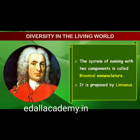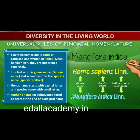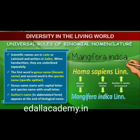Each name has two components - the generic name and the specific epithet. This system of providing a name with two components is called binomial nomenclature, given by Carolus Linnaeus and practiced by biologists all over the world. Let us take the example of mango. The scientific name of mango is written as Mangifera indica. In this name, Mangifera represents the genus while indica is the specific epithet.